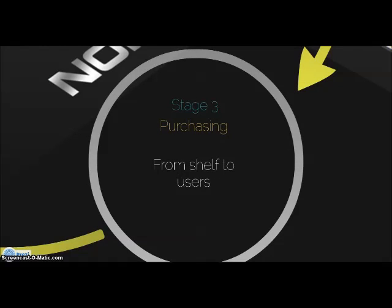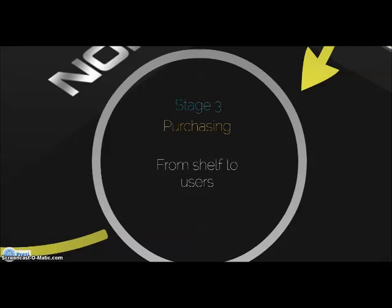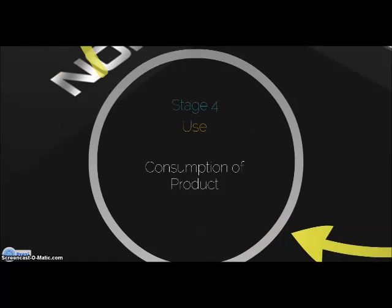Stage 3 is purchasing, from shelf to users. In this stage, the product is exposed in a retail outlet where information about the product is advertised. Stage 4 is use, the consumption of the product. During this stage, the product will be used by the consumer, whereby maintenance and repair of the product are involved.